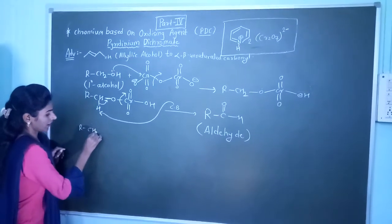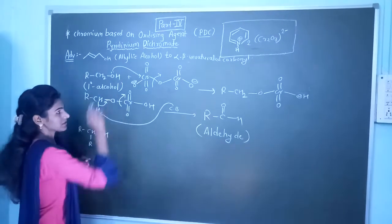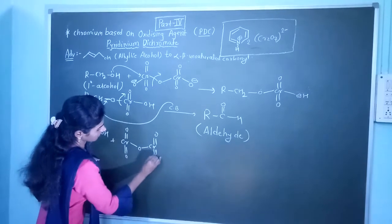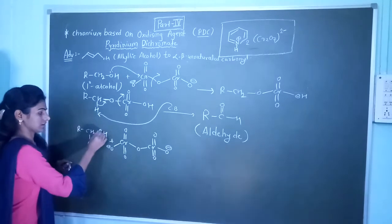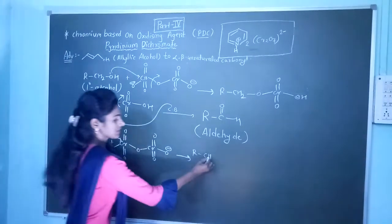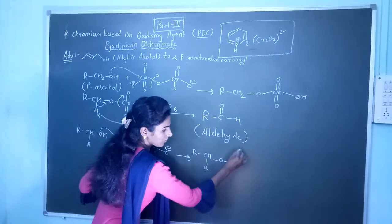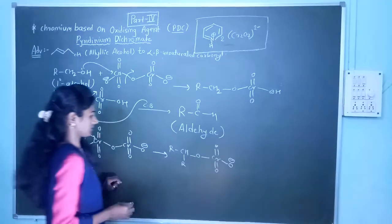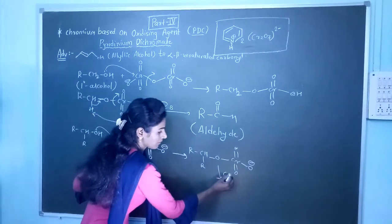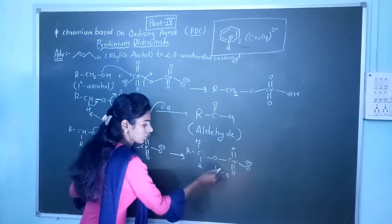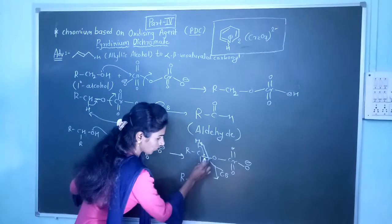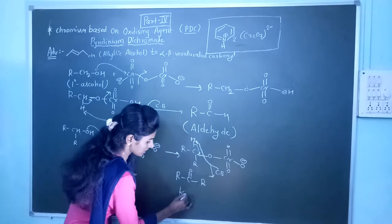From secondary alcohol, if we take secondary alcohol, the mechanism is the same. The O⁻ attacks over the chromium and forms the intermediate. The conjugate base will abstract the hydrogen atom, and this bond is shifted over to give R-C double bond O, with the R group remaining as it is — meaning formation of a ketone molecule.